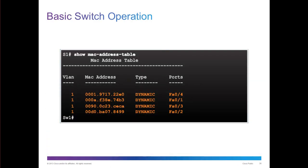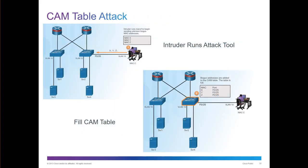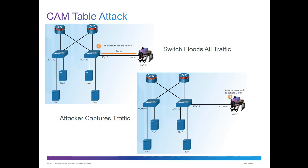CAM table attacks: on a Cisco switch you can do 'show MAC address table' to see MAC addresses, ports, how they were learned, and what VLAN they're on. In a CAM table attack, an intruder runs an attack tool that fills the CAM table with bogus information — garbage data — until the table is full. Then the switch floods all traffic, and the attacker starts capturing that traffic.